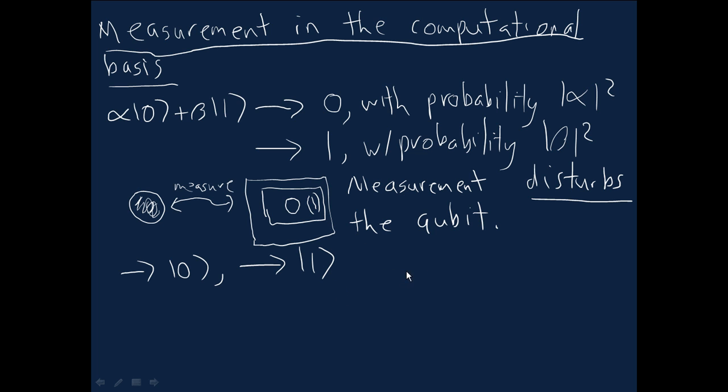And the key point to note here is that alpha and beta are now gone. You've lost, in the posterior state, there is no trace of the original alpha and beta. So you can't imagine,